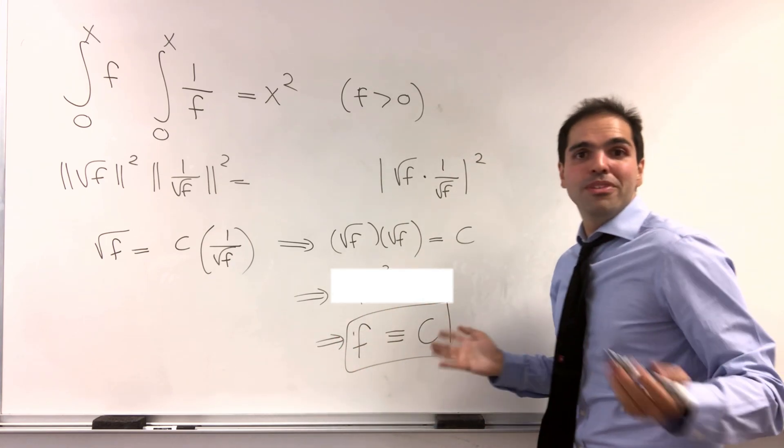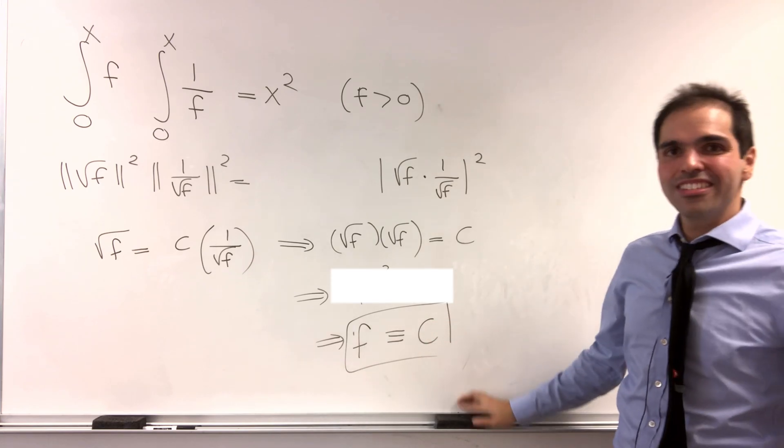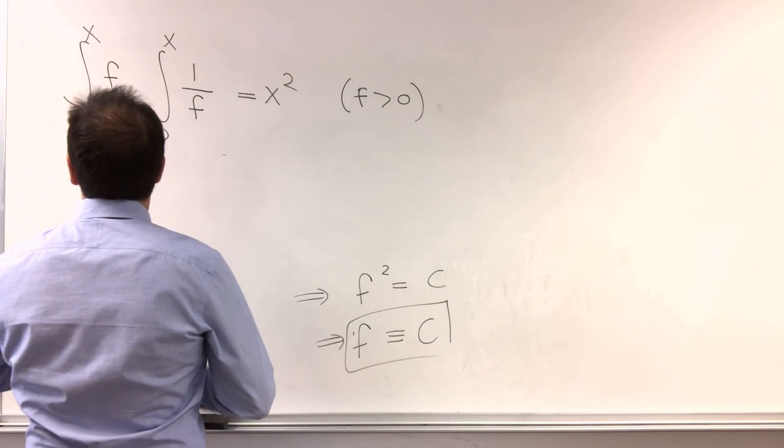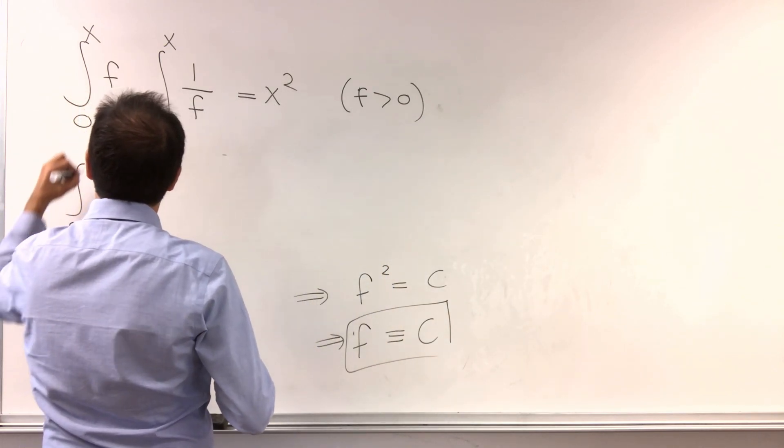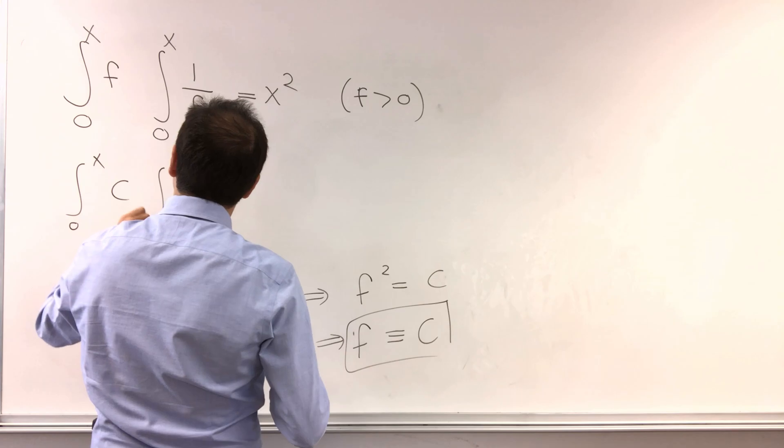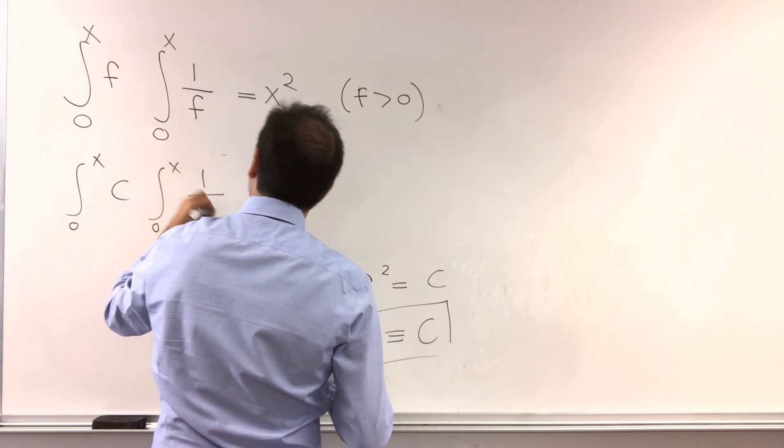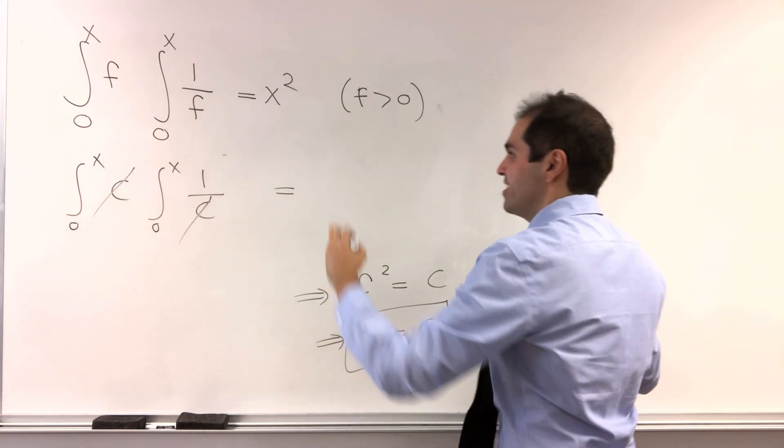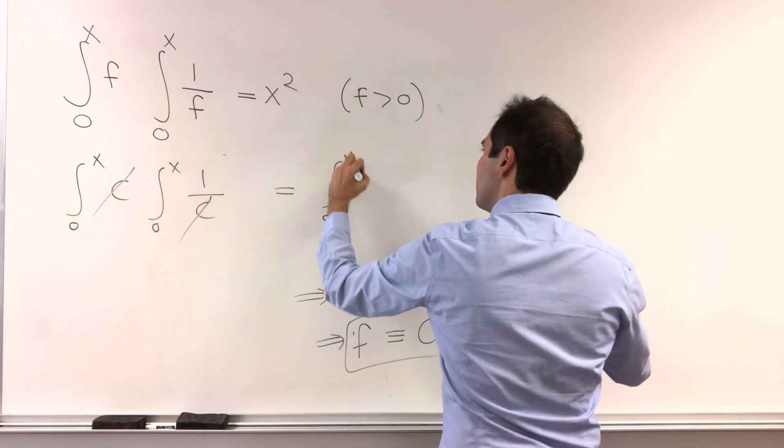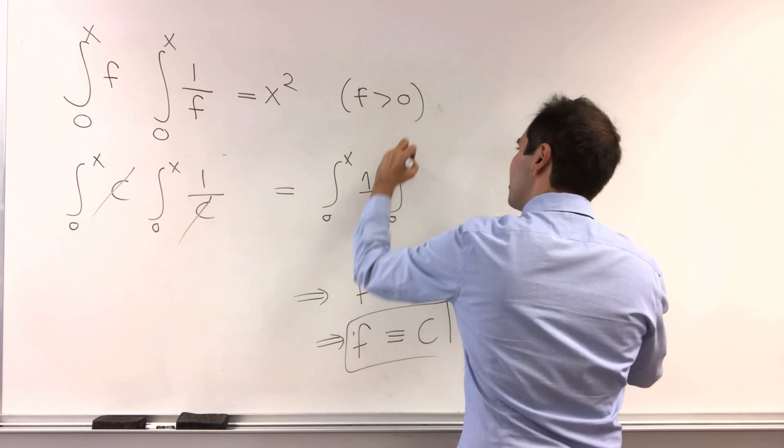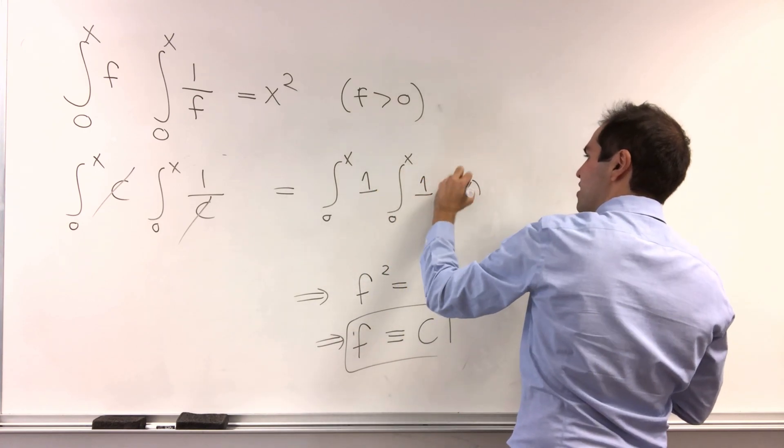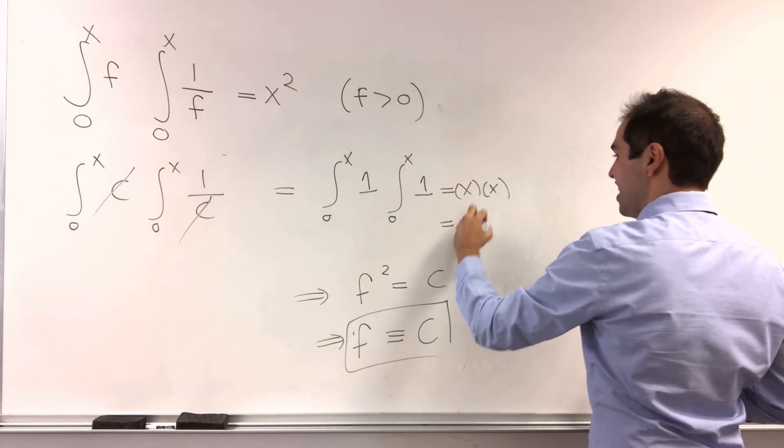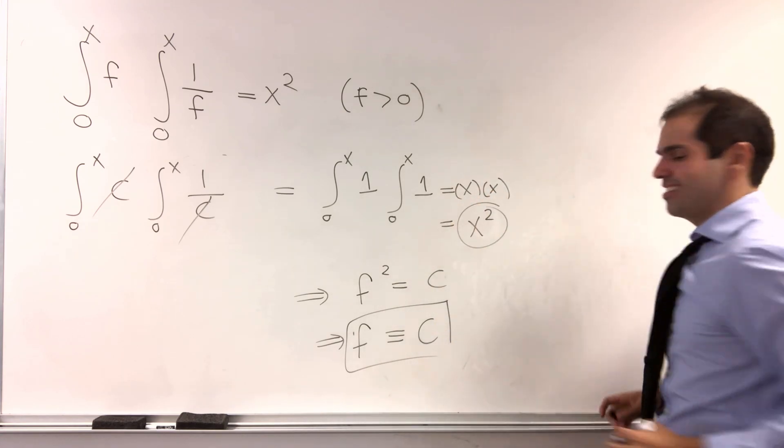And I was a bit skeptical about this. Well, shouldn't c be 1? But, in fact, no, because let's plug this in. Do we have integral from 0 to x of c times integral from 0 to x of 1 over c equals x squared? Well, yes, we do because those constants cancel out and we get integral from 0 to x of 1, integral from 0 to x of 1, and that is x times x, so x squared.